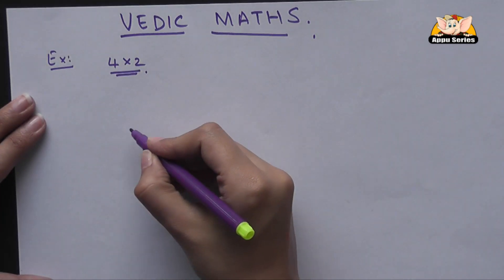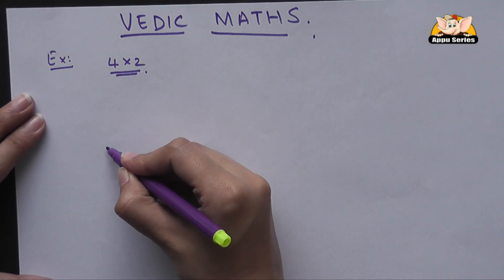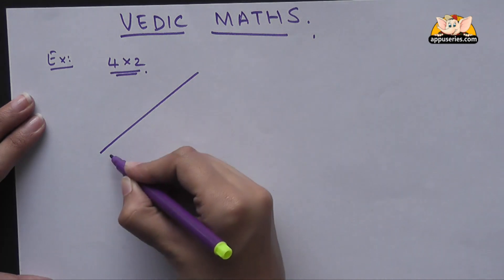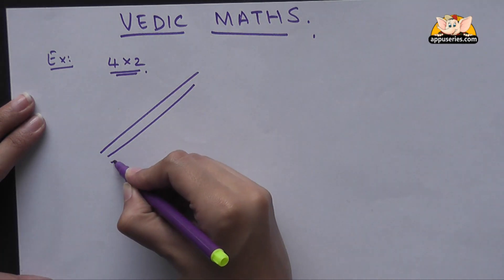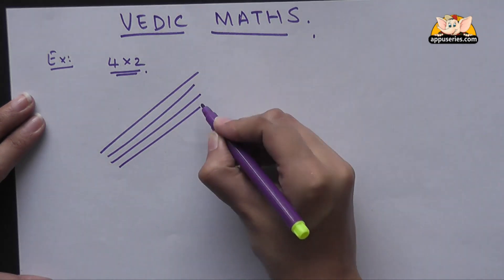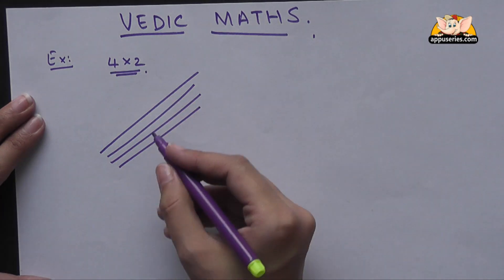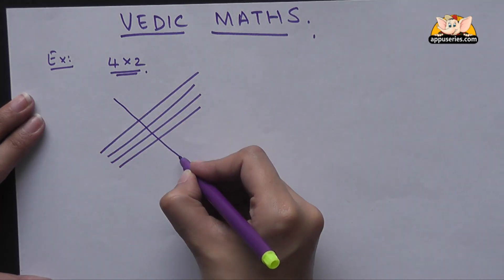For 4, we will draw 4 diagonal lines this way, and for 2, we will draw 2 lines here this way.